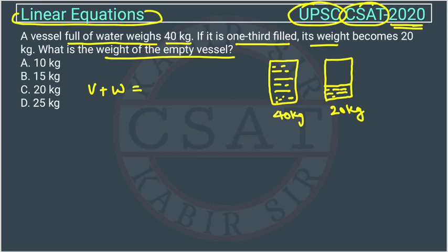Then V plus W is equal to 40 in the first case. In the second case, vessel weight will remain same, but the water weight is W by 3, and this is equal to 20.